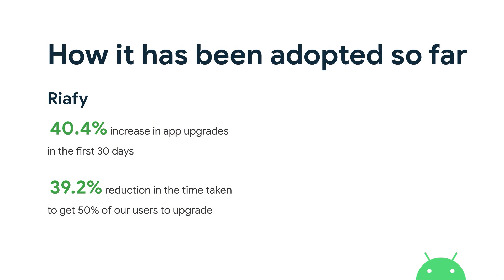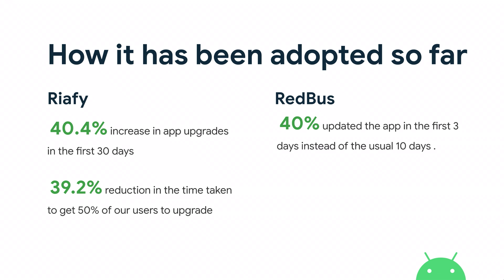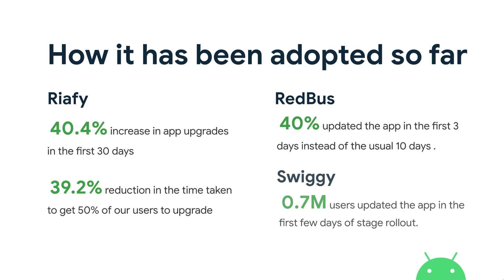Looking at results from partners who've adopted this: Reify, a recipe app from India, has seen over 40% of their users upgrading within the first 30 days, and nearly a 40% reduction in the time taken for 50% of users to upgrade to the new version. Redbus saw the time taken for 40% of their users to upgrade reduce from 10 to 3 days after introducing this API. And Swiggy, a food delivery app from India, saw an increase of 0.7 million users updating the app. Apps clearly benefit from users updating quickly, and users also benefit by seeing new features and bug fixes much earlier in the cycle.